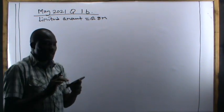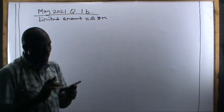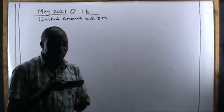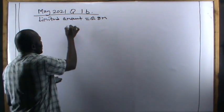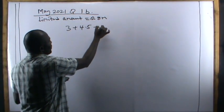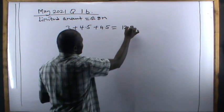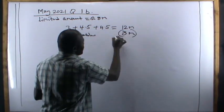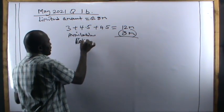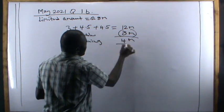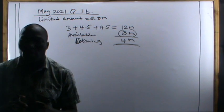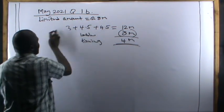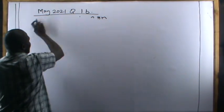The funds available is only 8 million and the projects require 3 million plus 4.5 million plus 4.5 million — totaling 12 million. But available funds is only 8 million, so there is a rationing of 4 million. This automatically makes us conclude that this is a topic on capital rationing. And because it's capital rationing, the first thing we need to do is rank the projects using the profitability index.